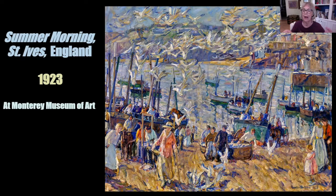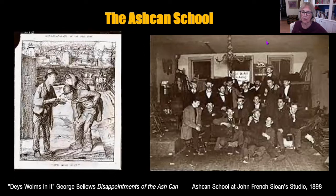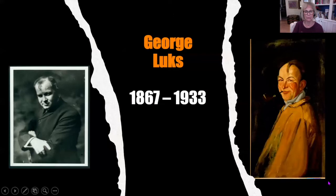Now we're going to talk about an entirely different point of view of our country. Here we have the cartoon that started the name for the Ashcan School, because critics said they were painting a seamy side of life. They took this George Bellows cartoon and made the name because they've taken food out of the trash can - which they call the Ashcan - and the caption says 'there's worms in it.' On the right you see some of the members of the Ashcan School from John Sloan's studio. The painter we're going to look at today is George Luks from that Ashcan School, and we'll learn a little about what he did in a video.